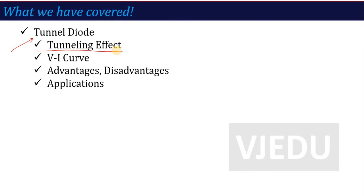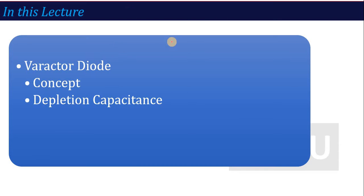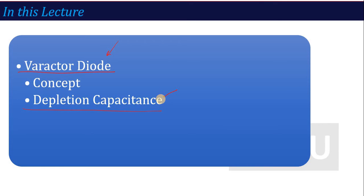Now, on a similar way, we are going to talk about the next special diode in this lecture. This is called the varactor diode. We will look at what is the working of varactor diode, what is the concept, and we will study an important thing called depletion capacitance. So, what is depletion capacitance? Let's start our lecture on varactor diode.